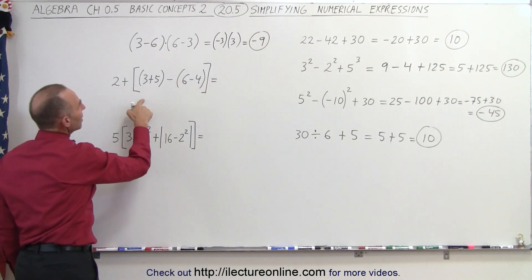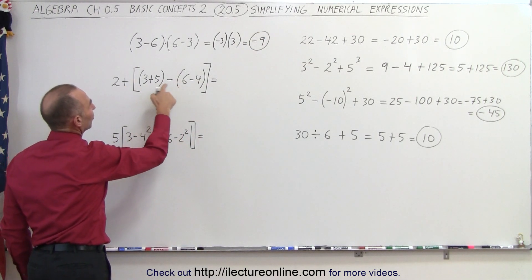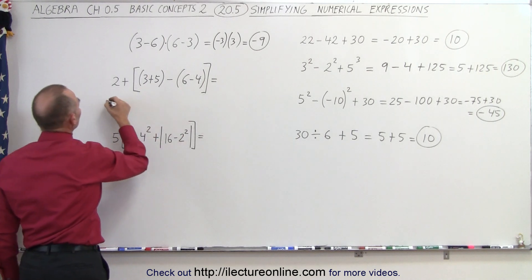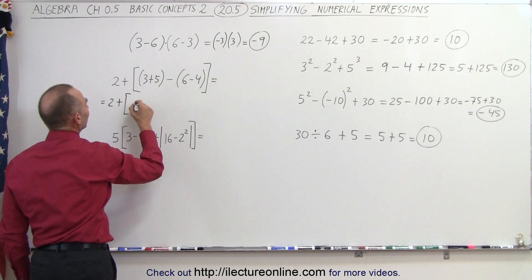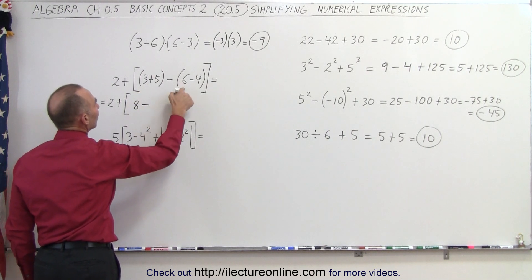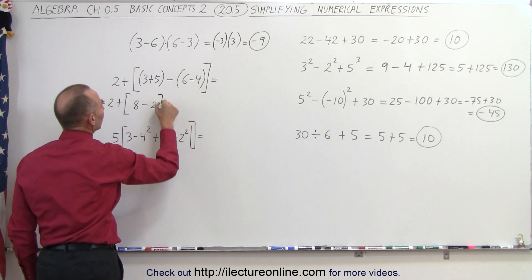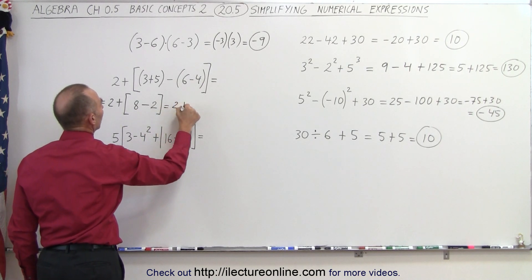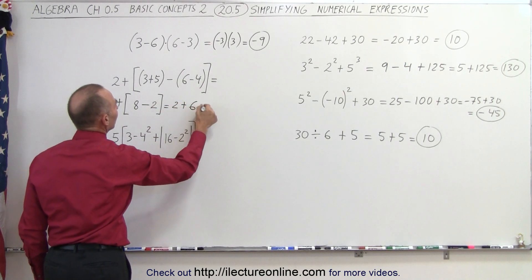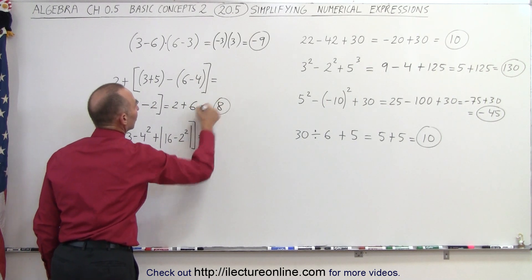On the next example here, we must do what's inside the parentheses first. So this is equal to 2 plus, we have 3 plus 5, which is equal to 8, minus 6 minus 4, which is equal to 2. Now we need to simplify what's inside the brackets. So this is equal to 2 plus 8 minus 2, which is 6. And 2 plus 6 is equal to 8.